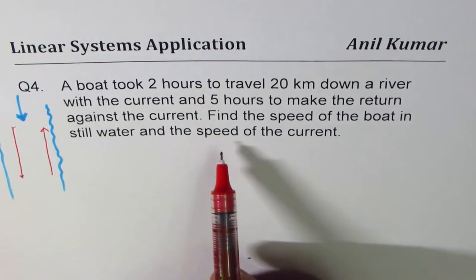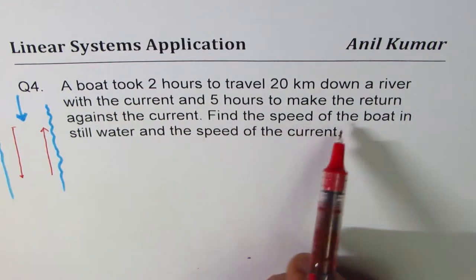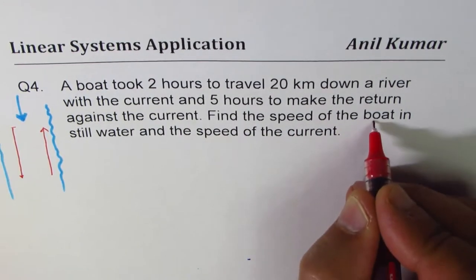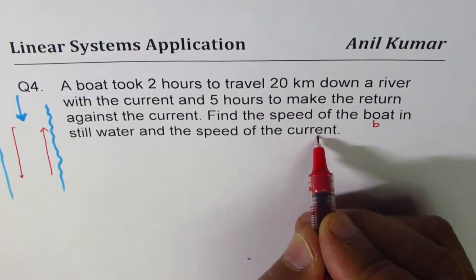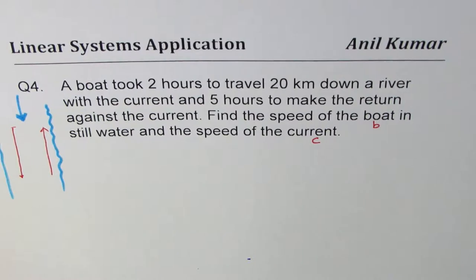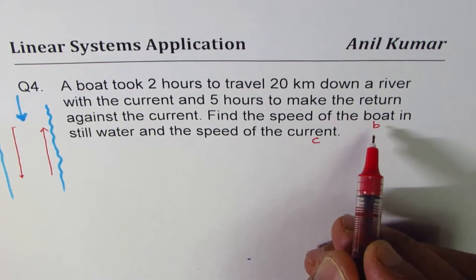Now to define the variable, we should see what we need to find. Find the speed of boat. So let this be B in the still water and the speed of current, we'll call this as C. So we have defined our variables B and C. We are saying that the speed of current is C and speed of boat is B.